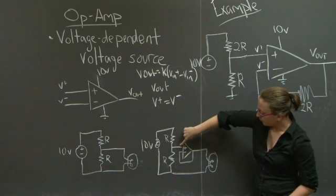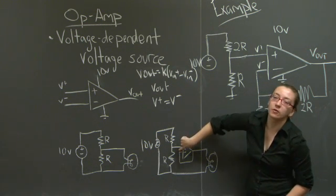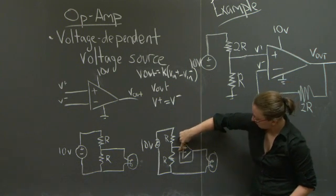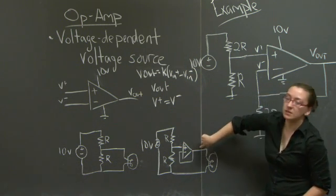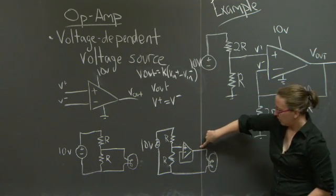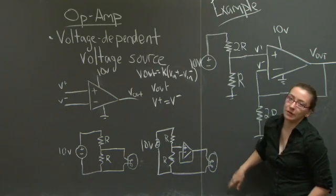Since this value is 5 volts, this value will also be driven to 5 volts by the op-amp, which means that this value is 5 volts, and we've successfully managed to power our light bulb with 5 volts.